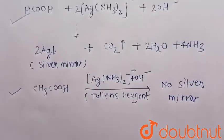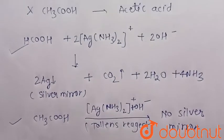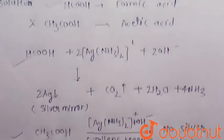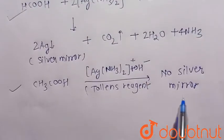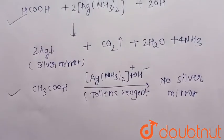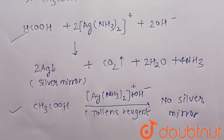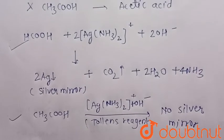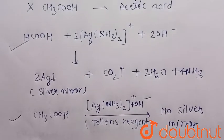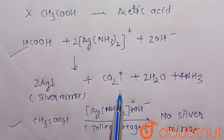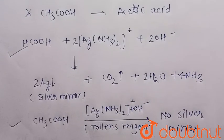We can clearly see that formic acid gives a positive Tollens' test, but acetic acid gives a negative Tollens' test. So, by the Tollens' test or Tollens' reagent, we can distinguish between formic acid and acetic acid. Thank you.